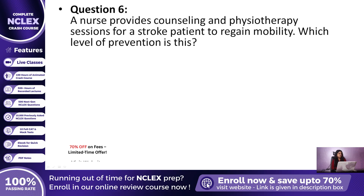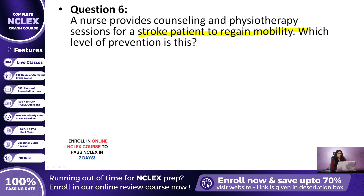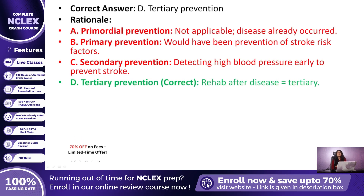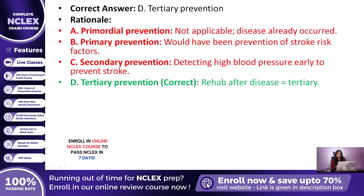Question 6: A nurse provides counseling and physiotherapy sessions for a stroke patient to regain mobility. Which level of prevention is this? The correct answer is D — Tertiary prevention. Rehabilitation after a stroke is the classic example of tertiary prevention. Primordial would have been preventing risk factors like smoking at a young age. Primary would be controlling blood pressure before a stroke happens. And secondary would be early detection of hypertension.